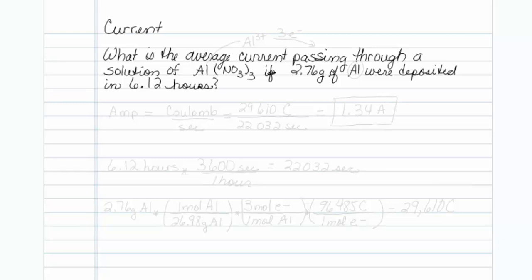This is how to determine the amount of current passing through. What is the average current passing through a solution of aluminum nitrate if 2.76 grams of aluminum were deposited in 6.12 hours? Let's define what current is.